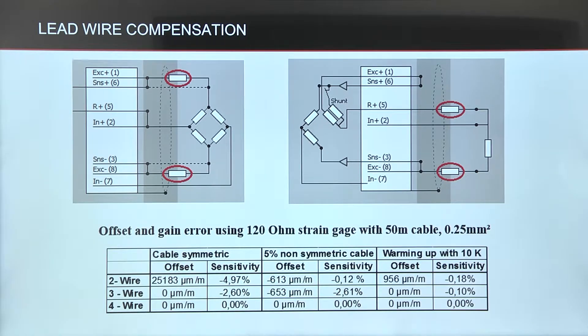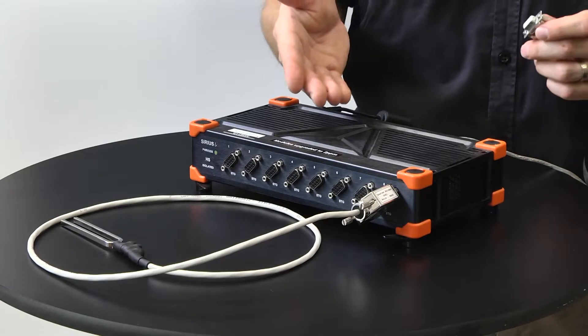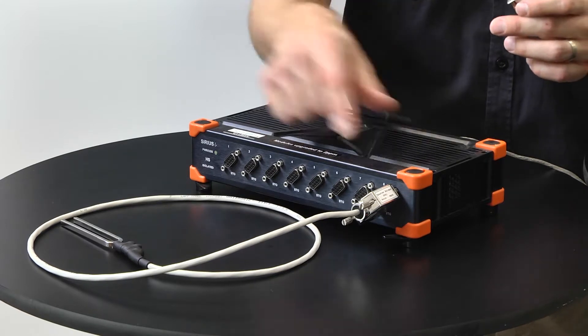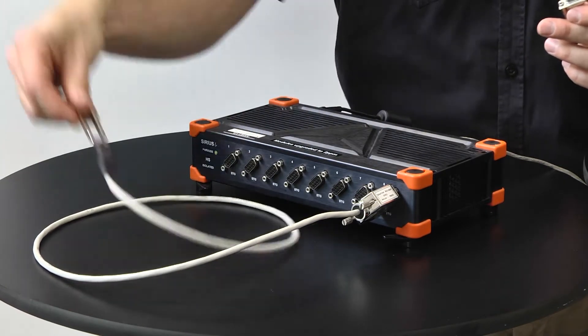In the table we can see an error caused by the lead wires when having symmetric and non-symmetric cables or warming wires in the measurement chain up by 10 degrees. I have done the lead wire compensation on channel number 8 where tuning force are attached.